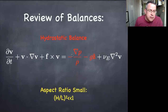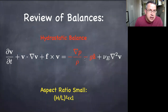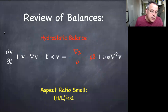Last time we focused on hydrostatic balance, which in the momentum equation is a pressure gradient force balanced by gravity — a two-term balance. We talked about how those dominant balances are a useful way to simplify this overall complicated equation. We haven't talked about where the other terms come from, so that's what we're going to focus on today.